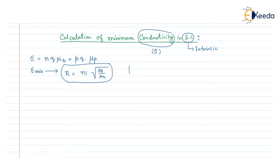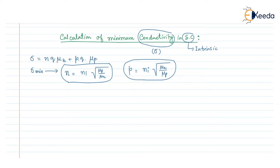Similarly, the hole concentration value at minimum conductivity can be written as n_i times the square root of mu_n divided by mu_p. This is the hole concentration of the semiconductor when the conductivity value will be minimum.